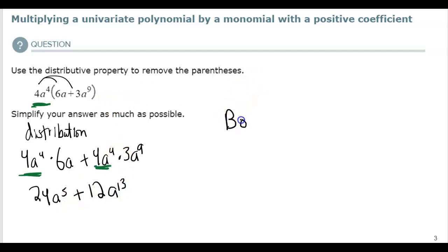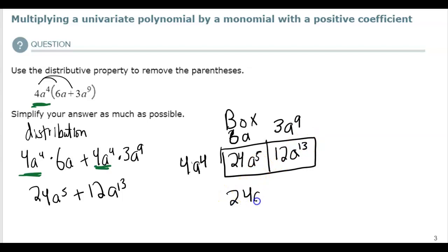If I did the box method, I'd make this a one box by two box. And then inside the box is multiplying those. So that's a to the fifth, and then you would add the a's, and you get 13. And then I have those two terms. So that is the box method.